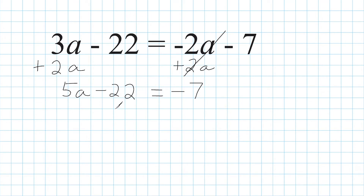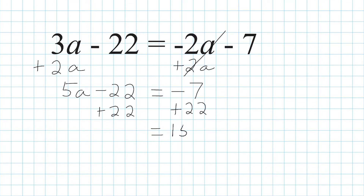Now what we're going to do is take this minus 22 and move it over to the right-hand side. So we're going to take the inverse of that, which is plus 22, and write it on both sides of our equation. That leaves us with positive 15 on the right-hand side, and on the left-hand side we have the product of 5 and a. At this point we should just know that a is going to equal 3 because 5 times 3 is 15.